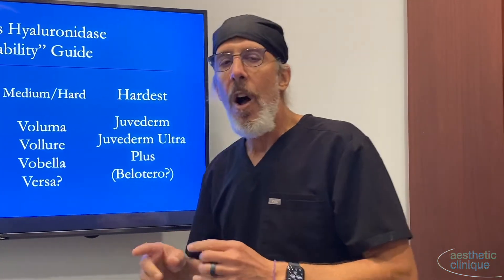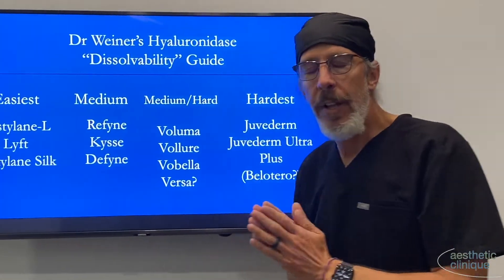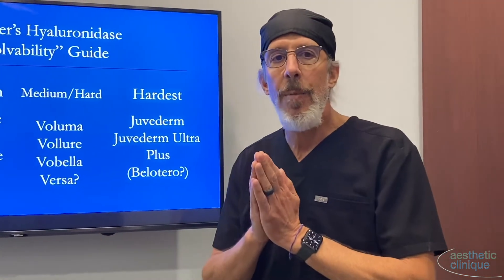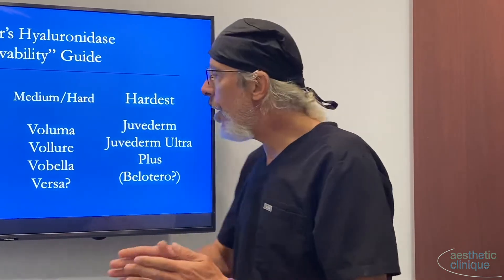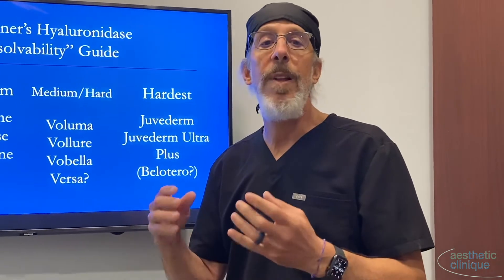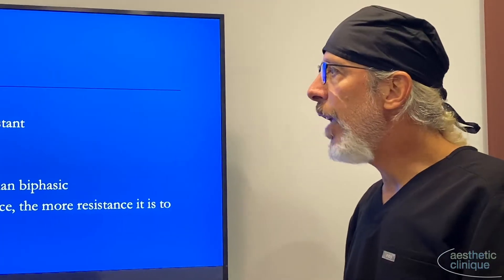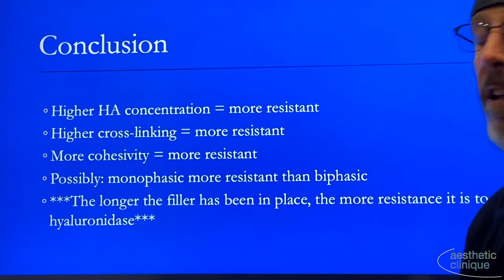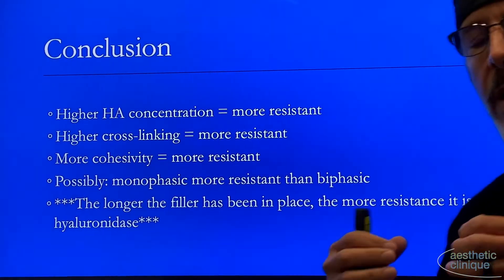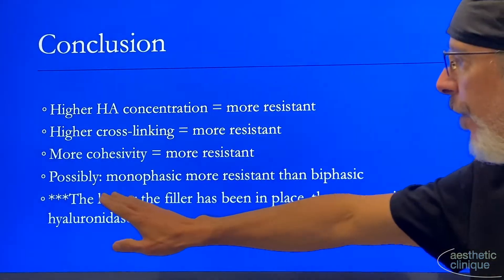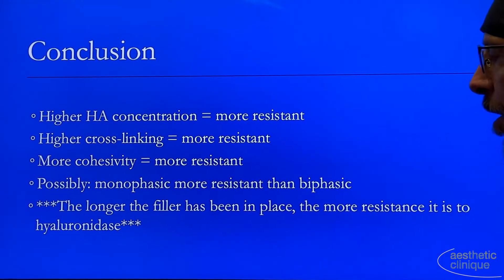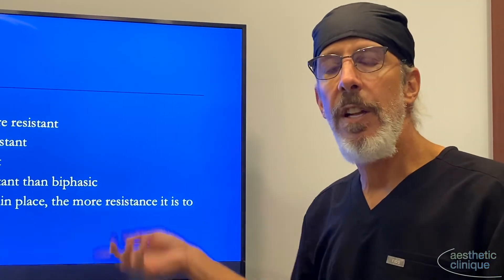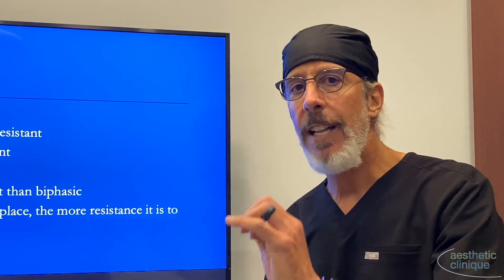One more point: all these suggestions are based on normal HA. If the patient has delayed onset nodules or granulomas, all bets are off — it will be much harder to dissolve. In conclusion: higher HA concentration is more resistant; higher cross-linking is more resistant; more cohesivity (the ability to bond to itself) is more resistant; and possibly monophasic is more resistant than biphasic, though that's controversial. Finally, from my clinical experience — not from studies — the longer the filler has been in place, the harder it is to dissolve.